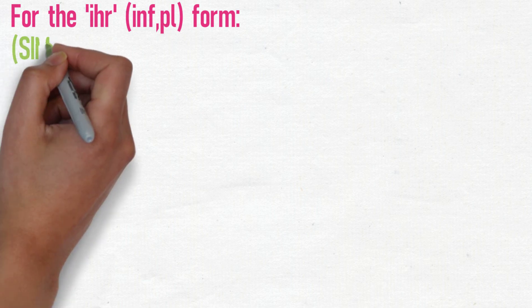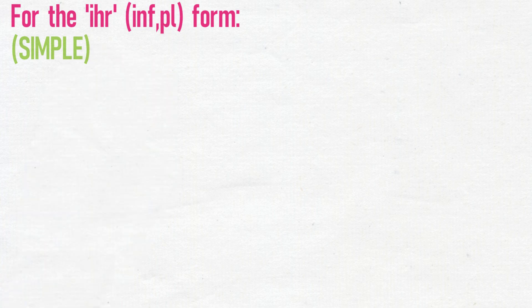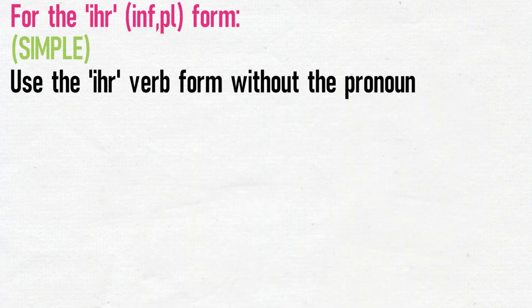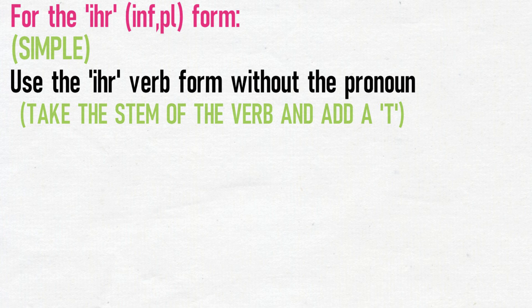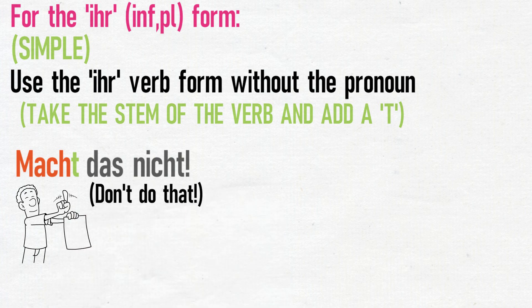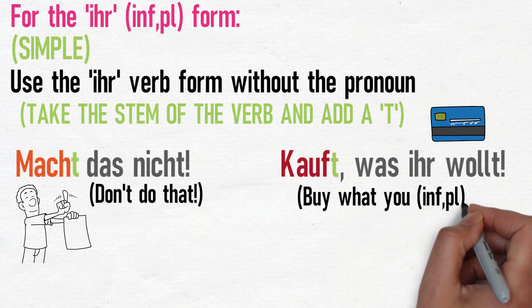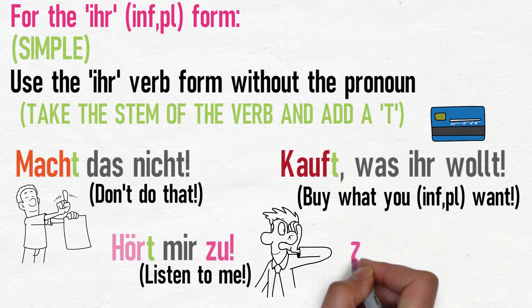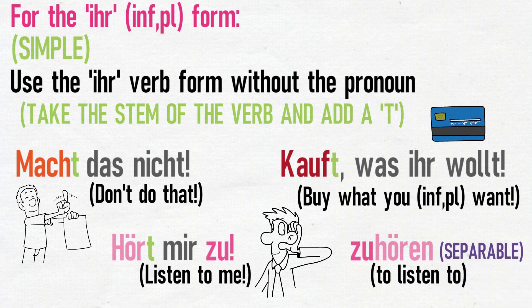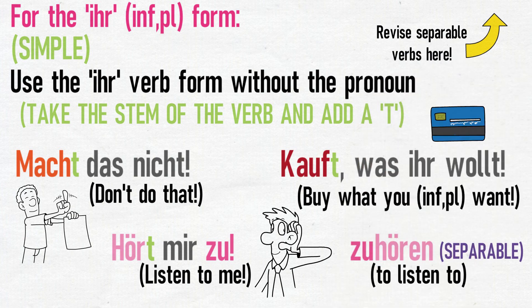When giving an instruction to several people for whom you would normally use the ihr pronoun, you need to form the imperative differently. Fortunately, the ihr imperative is extremely easy — all you need to do is use the ihr form of the verb without the pronoun, taking the stem and adding a T. Examples: Macht das nicht — Don't do that. Kauft, was ihr wollt — Buy what you want. Hört mir zu — Listen to me. The verb zuhören (to listen to) is a separable verb, and separable verbs will separate when used in the imperative.